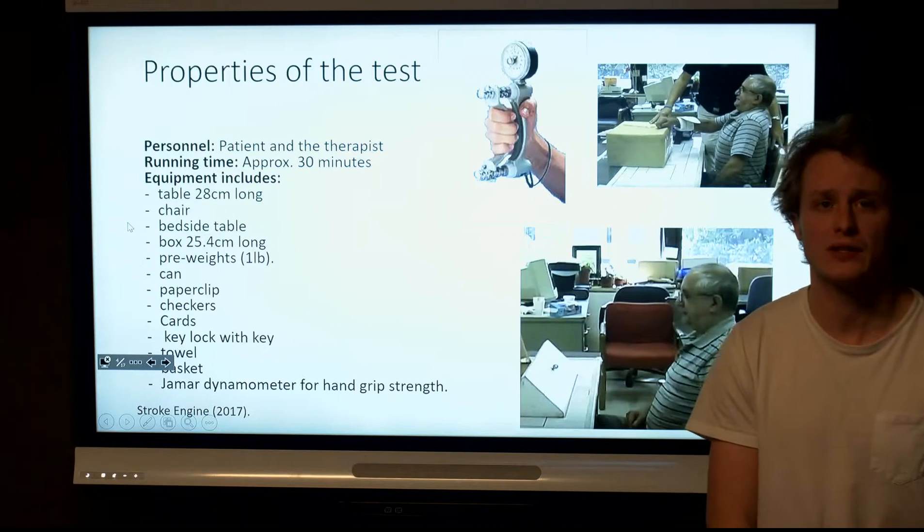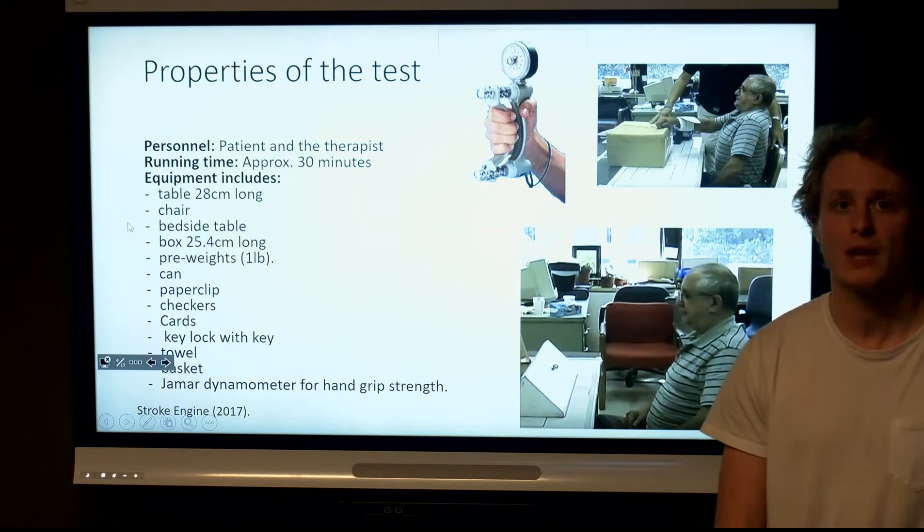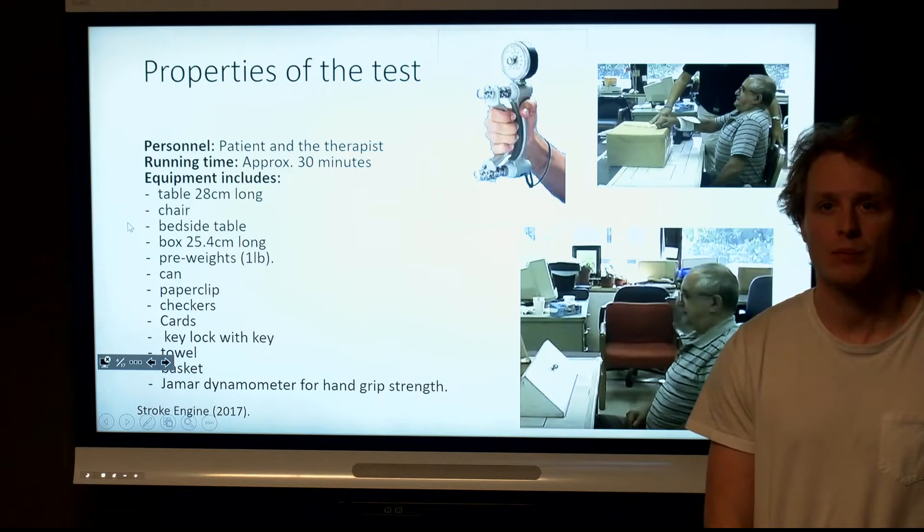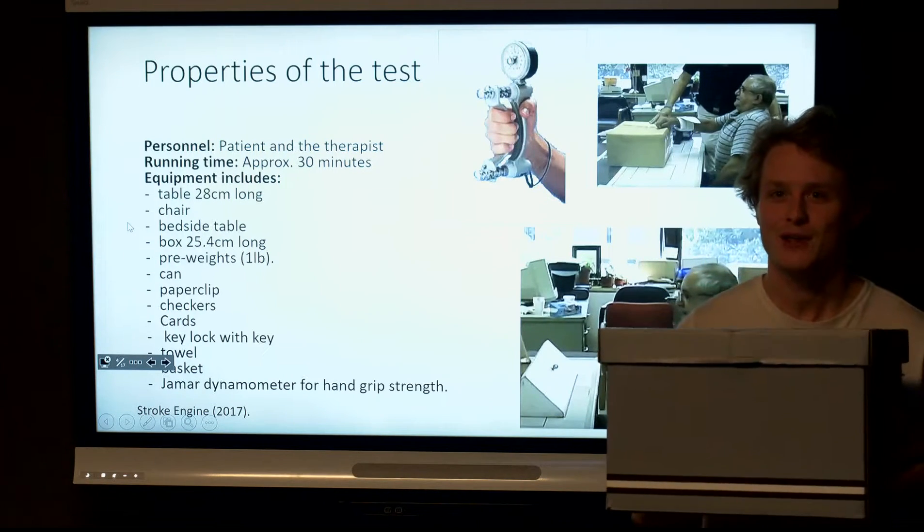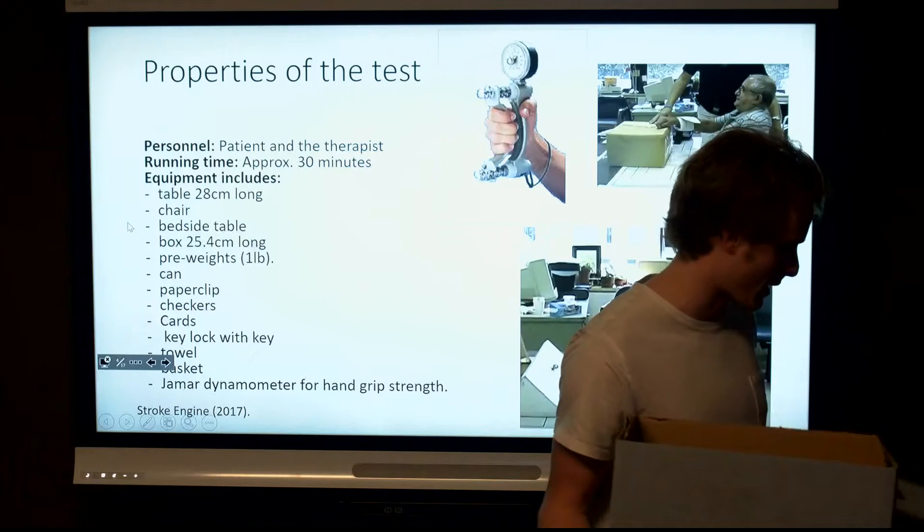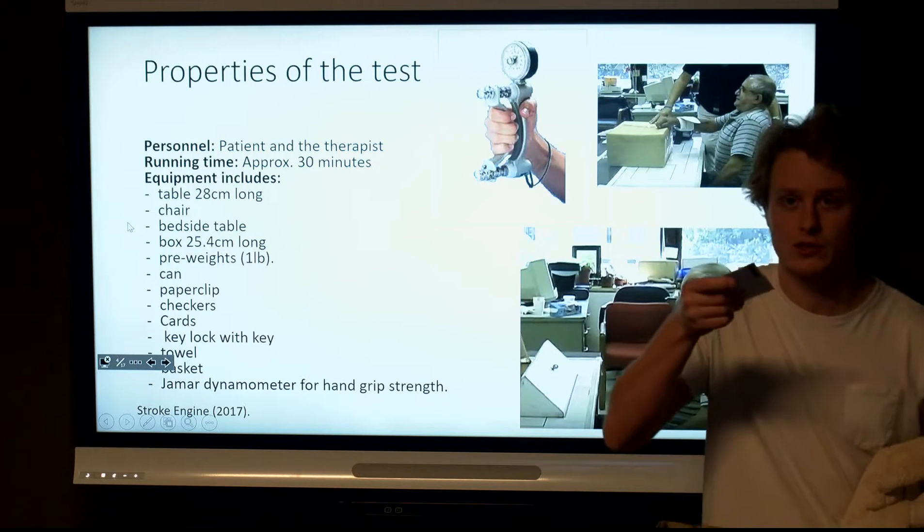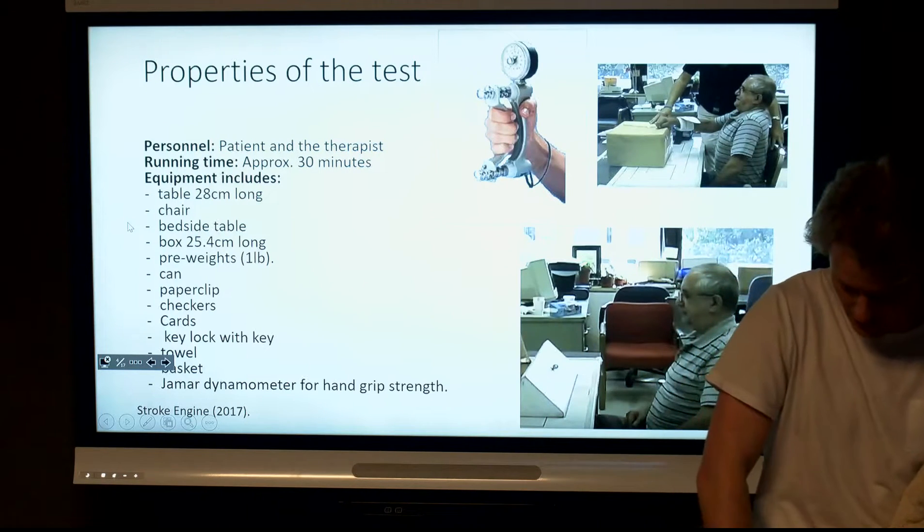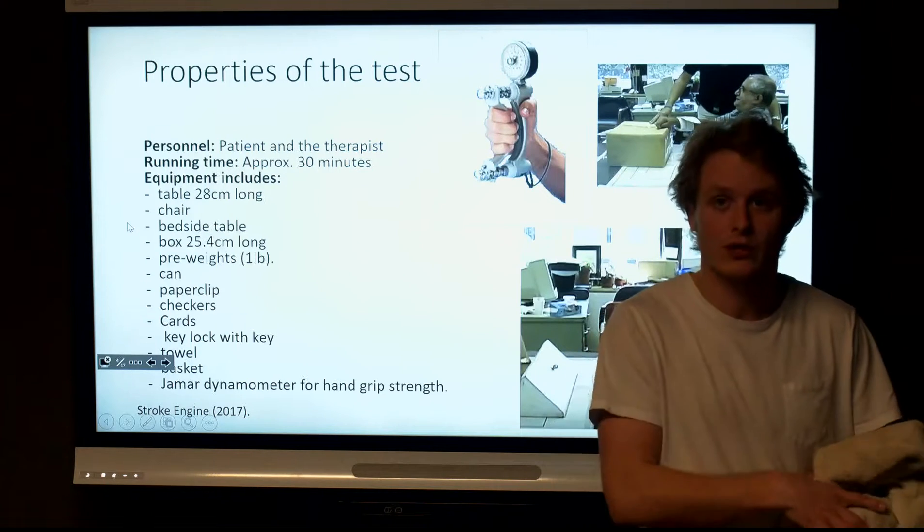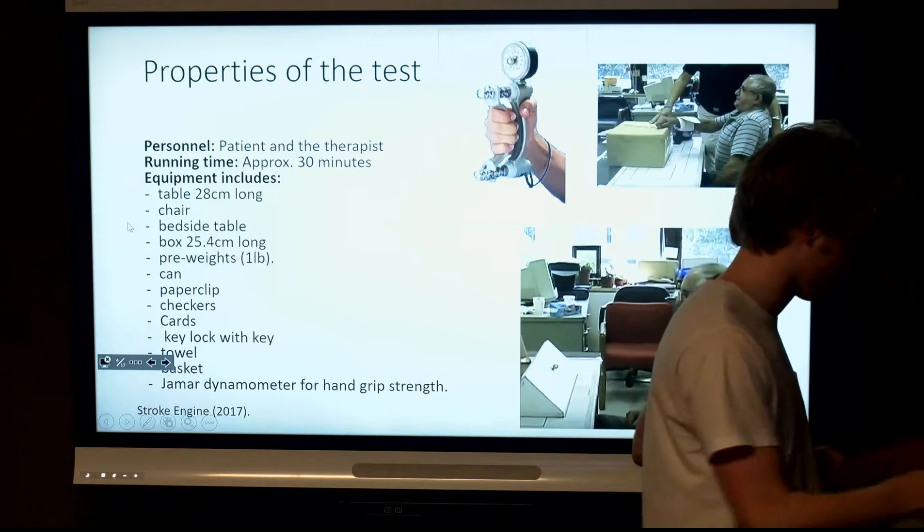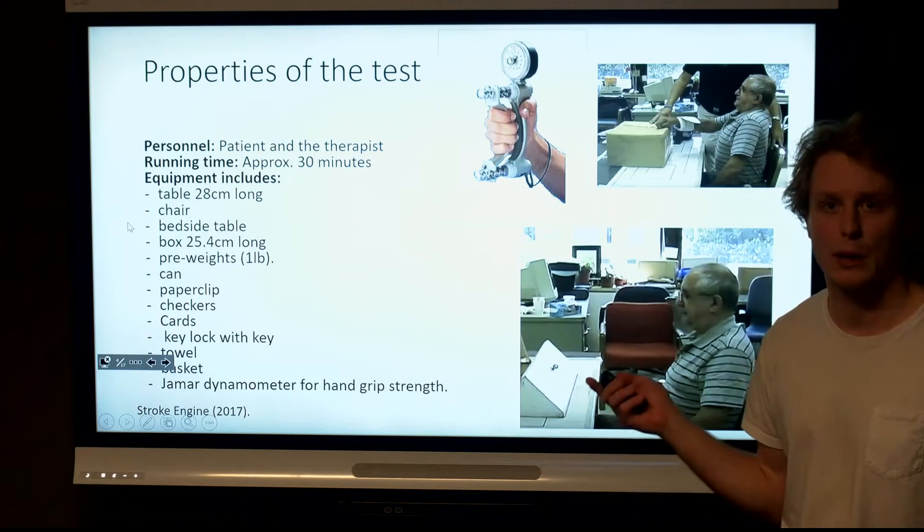The properties of the test are that the patient and therapist are present for it, and it runs for approximately 30 minutes. The equipment provided is listed there, and I've brought along some props here. This would be a box that would be used for the patient to abduct their shoulder to, and there would be more fine movements such as picking up cards like this off the table, lifting a pencil off the table which I will show you, and folding a towel. There's also a JMR dynamometer used for grip strength.